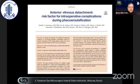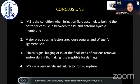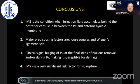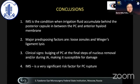We published that observation at JCRS quite recently. To conclude: intraoperative infusion misdirection syndrome is the condition when irrigation fluid accumulates behind the posterior capsule, between the posterior capsule and the hyaloid membrane. The major predisposing factors are loose zonules and lysis of the vitreous ligament, which attaches the anterior hyaloid to the posterior surface of the capsule. Clinical signs to keep in mind include bulging of the posterior capsule at the final steps of nucleus removal and during irrigation aspiration, making it very susceptible to damage. This is a significant risk factor for posterior capsule rupture, not only for younger surgeons but also for experienced ones. Thank you very much for your kind attention.